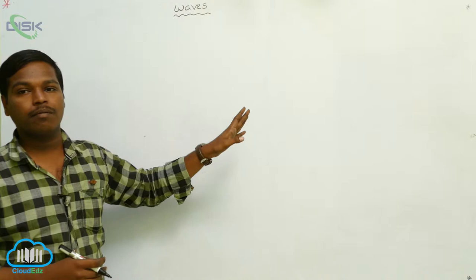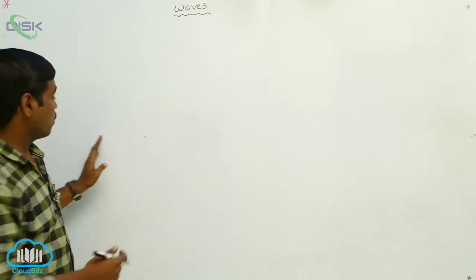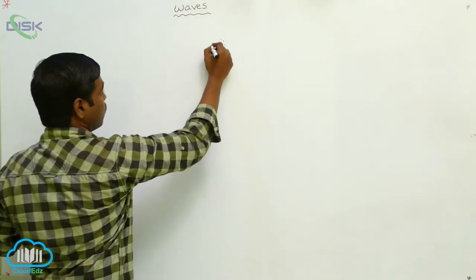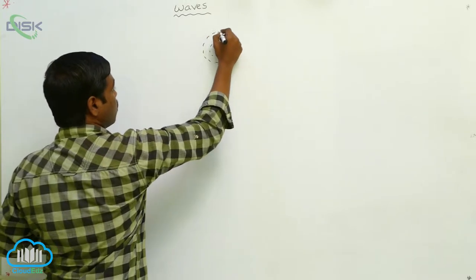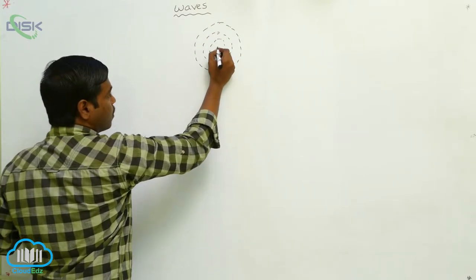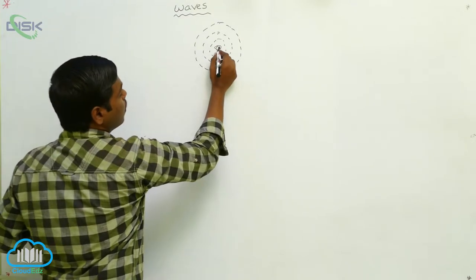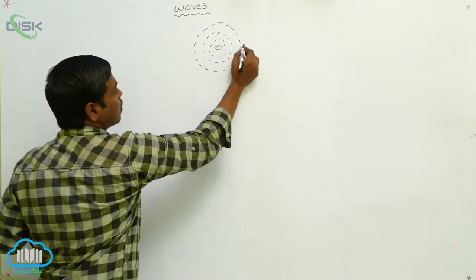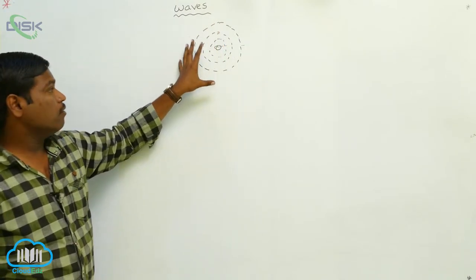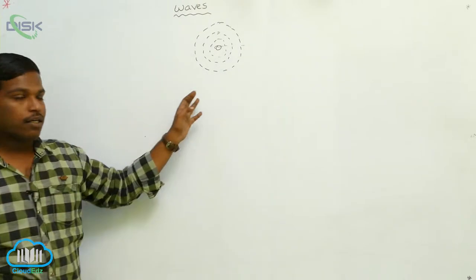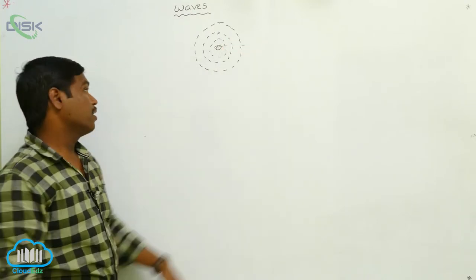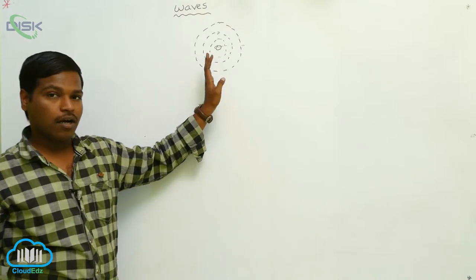That means from one point to another place. Waves are produced — for example, if we drop a stone in the water, the ripples produced travel from one point to another point. In these waves, the water as a whole does not travel; only the disturbance is traveling from one point to another point. This is called a wave.